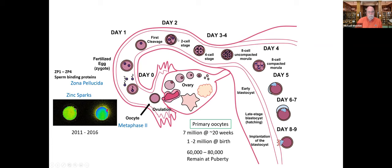Between day one and day two you have a two-cell stage, then cells continue to divide — four cell, eight cell, and more. This collection of cells then becomes compacted, and by day five you start to see the blastocyst, where cells collect in a particular part of the developing structure. By day eight or nine, the fertilized egg has moved far enough down the tract to be in the uterine system and can implant in the uterine wall, which eventually allows production of the placenta.